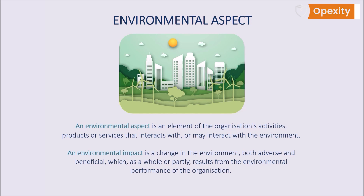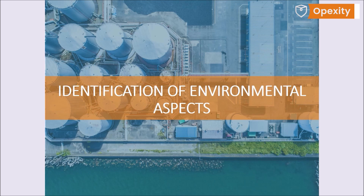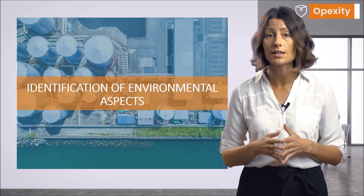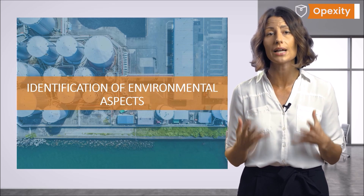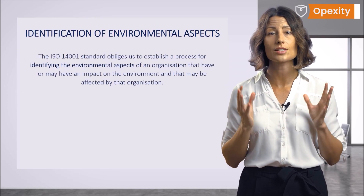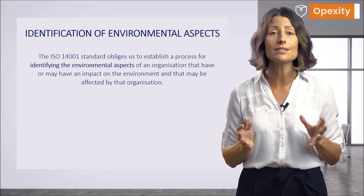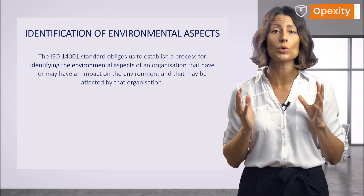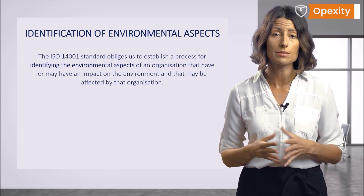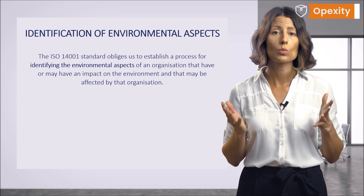In accordance with the main assumptions of the environmental management standard, the aim of identifying and assessing environmental aspects is to improve the relationship between the environment and the effects of the organization's performance. The identification of environmental aspects in due manner will allow us to carry out a comprehensive assessment of the environmental impact. The ISO 14001 standard obliges us to establish a process for identifying the environmental aspects of an organization that have or may have an impact on the environment, and that may be affected by that organization.